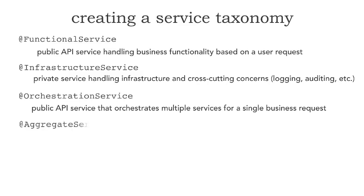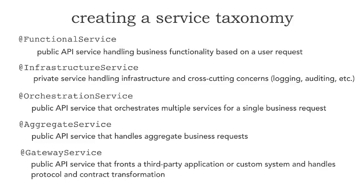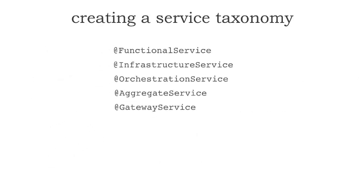The aggregation service handles aggregate business requests — for example, how many orders does a customer have, or what benefits does a particular client have? Each benefit may be an individual microservice, but you need to aggregate the type or count, so that's a different kind of microservice purpose. Finally, the gateway service is a public API service that fronts a third-party application or custom system to handle protocol and message transformation. These are all five common annotations you can add to your entry point classes to identify what kind of service it is.